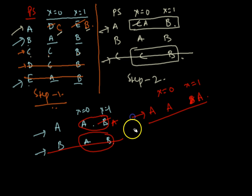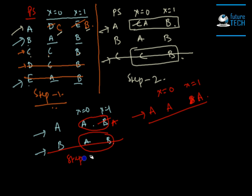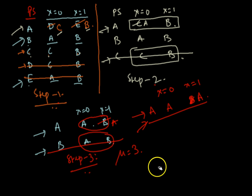Once we are left with only one state after contraction, the machine is confirmed to be a definite machine. The number of steps taken to reach this single-row table gives the order of definiteness. In this case, it took three steps — steps 1, 2, and 3 — so mu equals 3. This is how we check definiteness using the contracted table method. In the next tutorial, I'll show how to do this using the testing table and testing graph. Thank you very much.